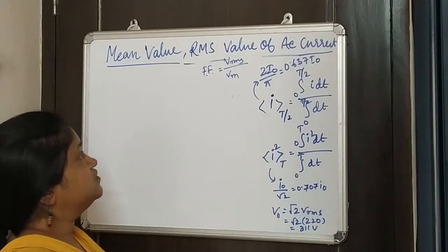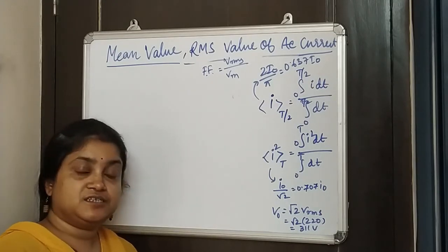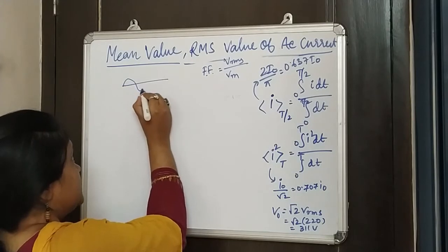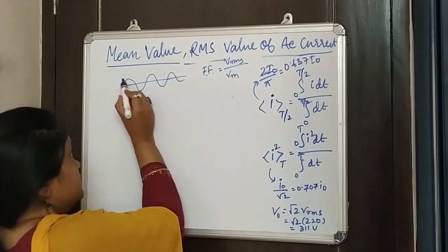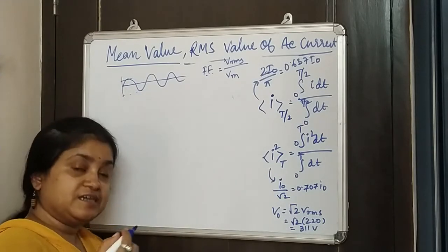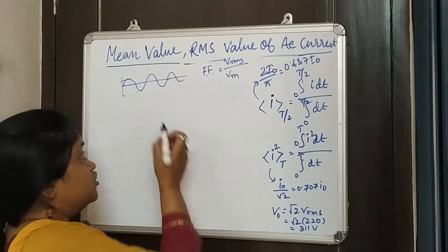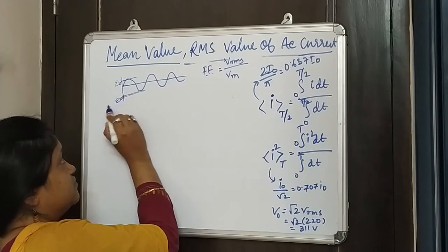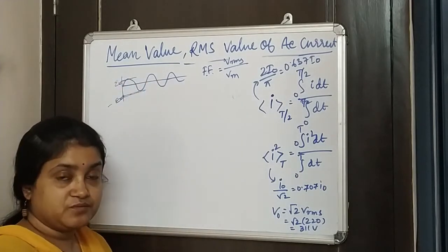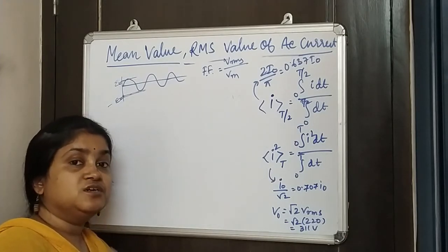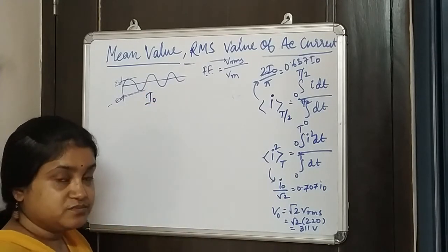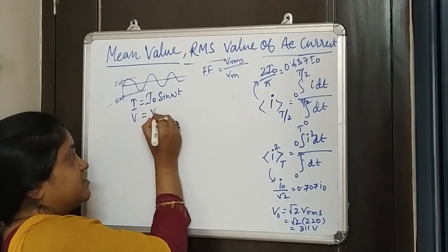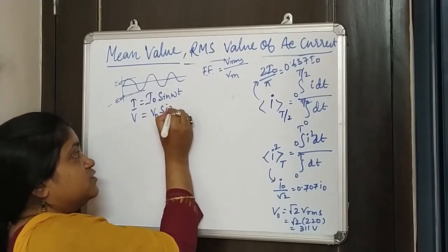Now let's discuss the mean value and RMS value of AC current. In an AC cycle, the current moves in a sinusoidal curve. This is also called an electromagnetic wave. The amplitude, which is the maximum value of this wave, is what we call the maximum value. For AC current, we call I₀ the maximum current, where the instantaneous current is I = I₀ sin(ωt) and the instantaneous voltage is V = V₀ sin(ωt).